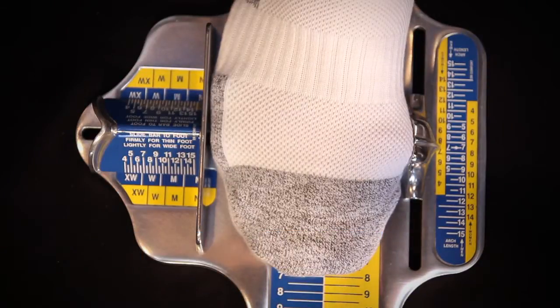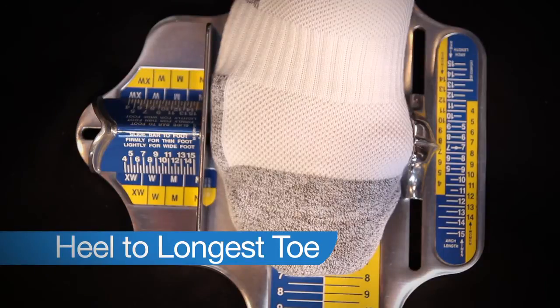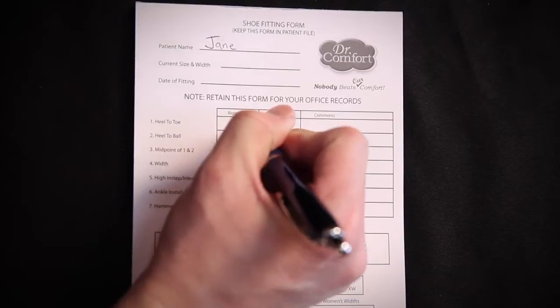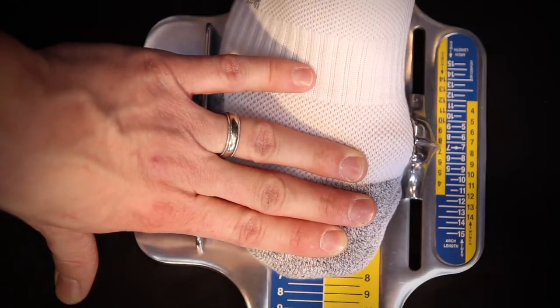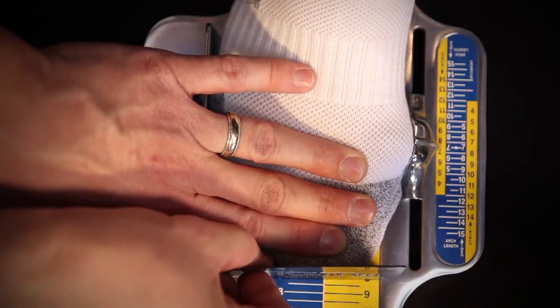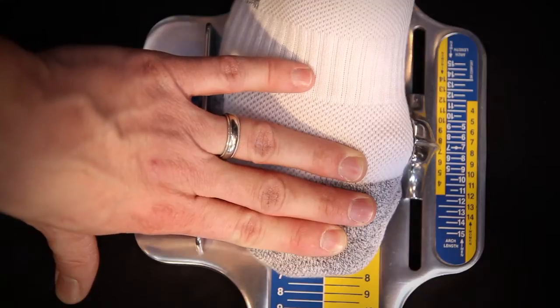Next, measure the heel to the longest toe. In this case, it's a size 8 1/2 or a length of 8 1/2. I checked by looking directly over her toes or I could use a credit card and slide it right up against her toes reading the next available number.